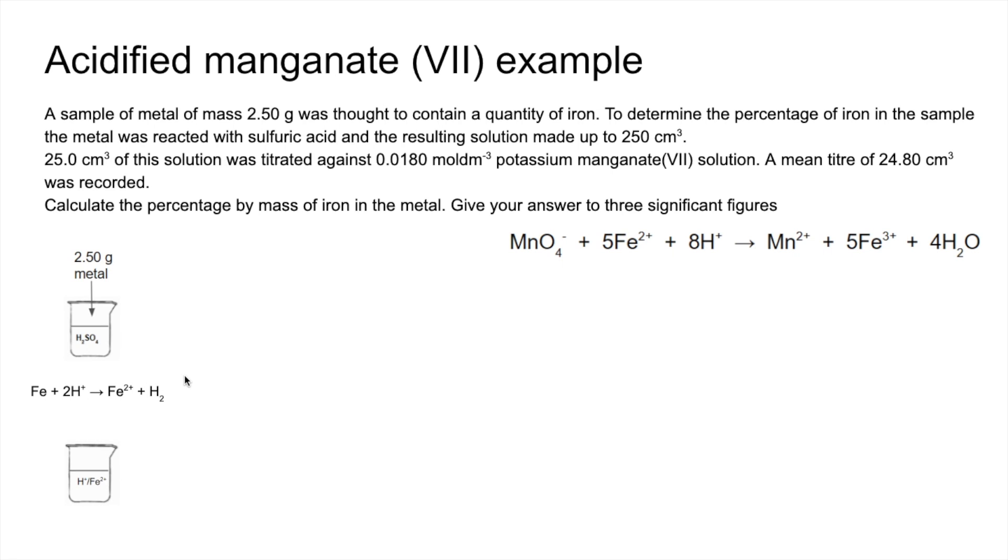So at the end of that reaction, you've got aqueous Fe2+ ions now in that beaker and those H+ ions. That's then poured into your volumetric flask. Remember it's 250 cm³. So essentially the moles of Fe2+ in this beaker are the same as the moles in here because we literally just poured the contents of that in there and filled it up with distilled water.